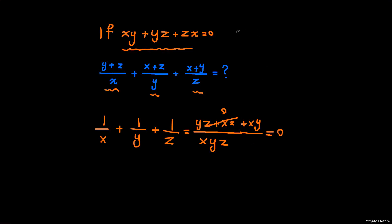So I'm going to go and add this here. 1 over x plus 1 over y plus 1 over z is actually 0. So how does that help?